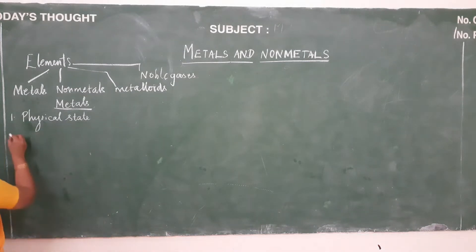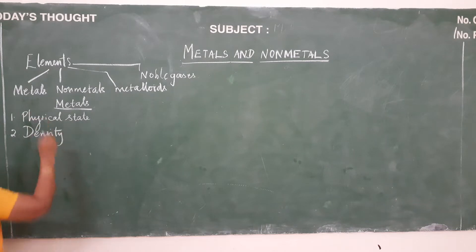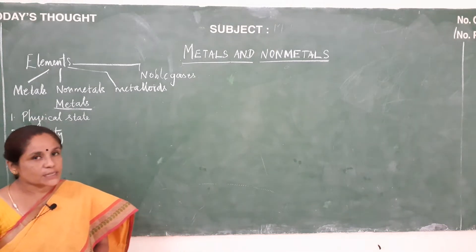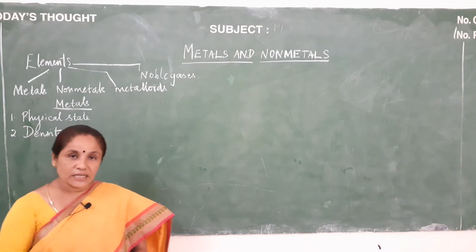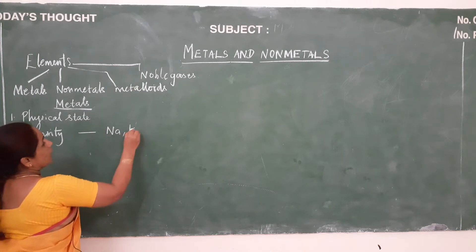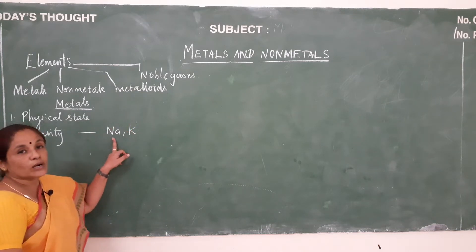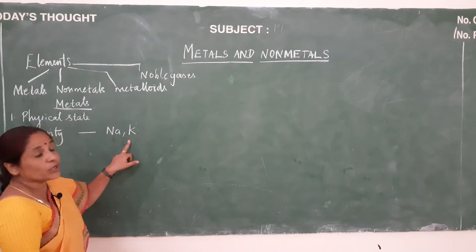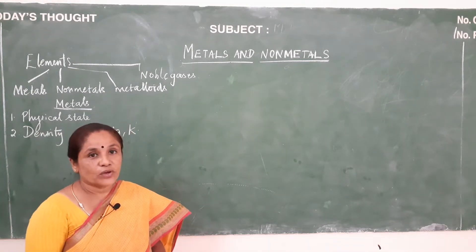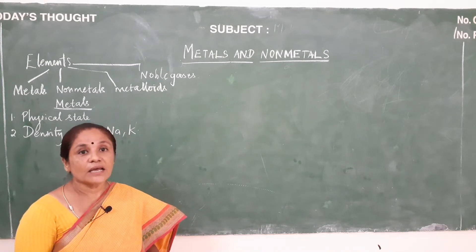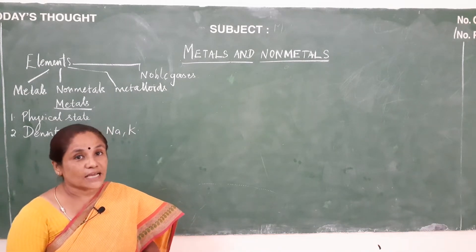The second property is density. All metals are generally very dense in nature, that is they have high density. Exception is there for sodium and potassium — these two are called soft metals and can be very easily cut with a knife. You have another element called osmium, which is very hard, so that it can even scratch glass.